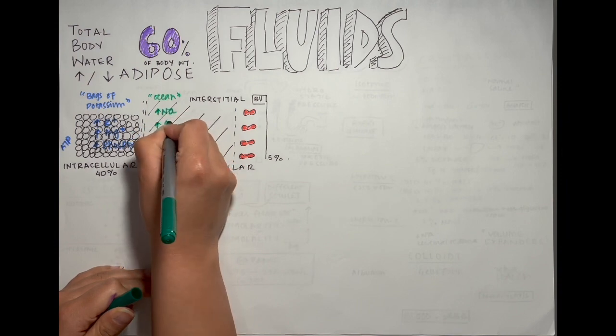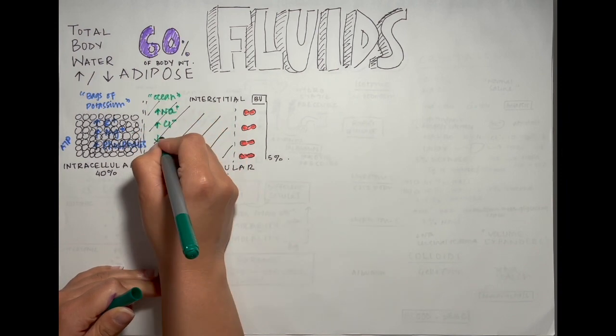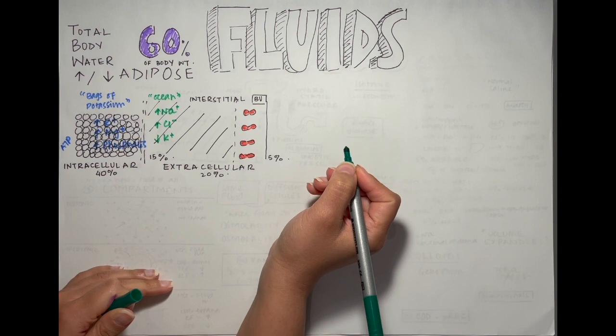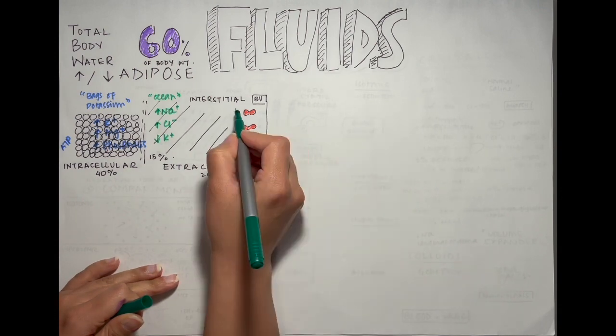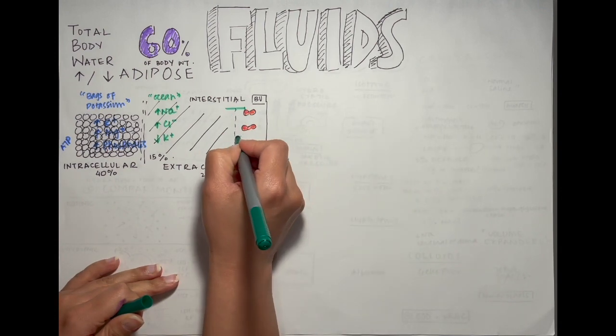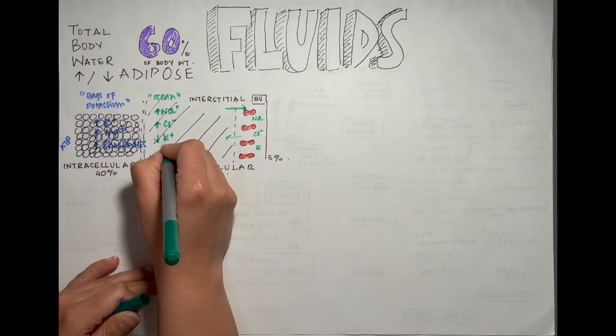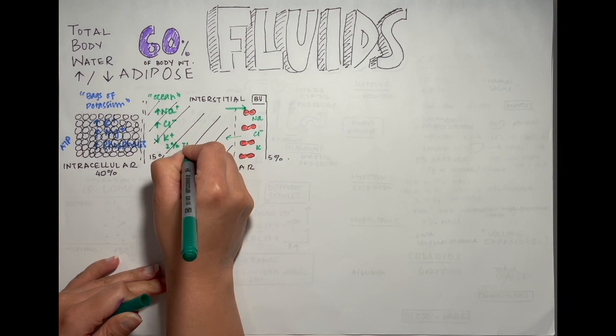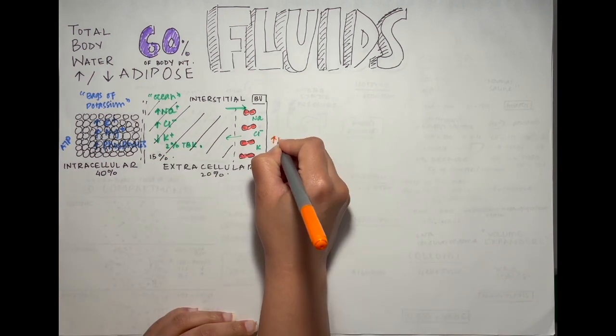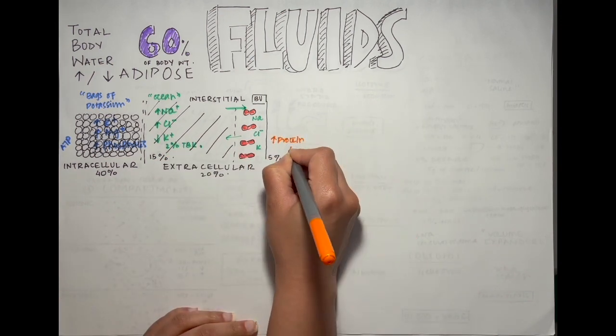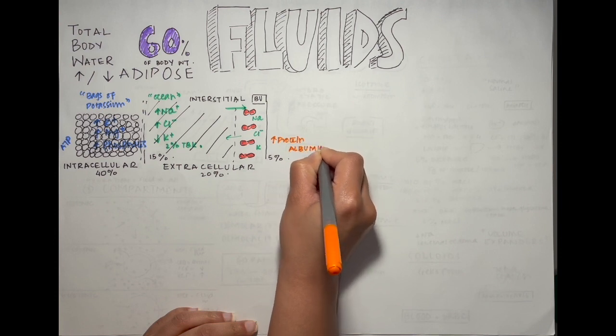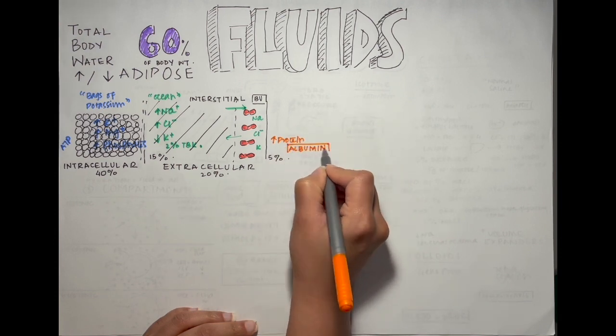Capillaries are leaky so interstitium and the plasma have a similar content of electrolytes, but they do differ in protein content which blood contains in the form of albumin.